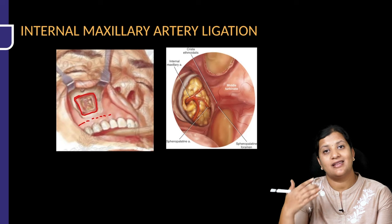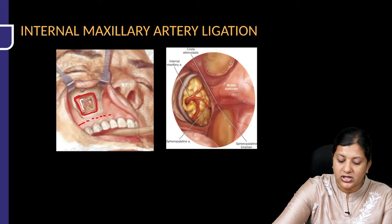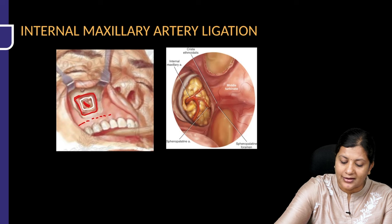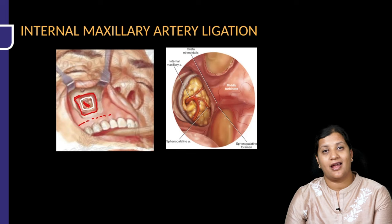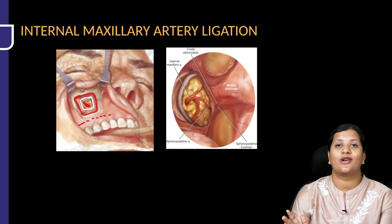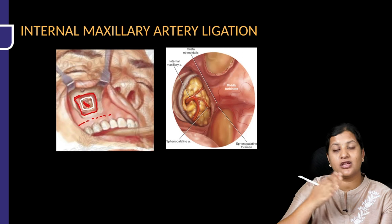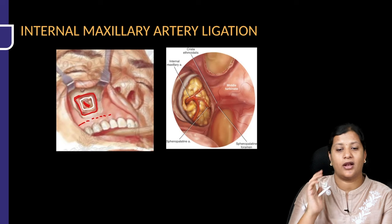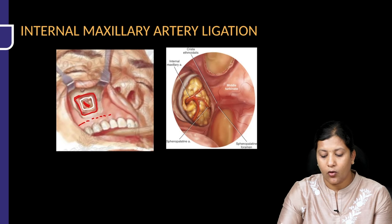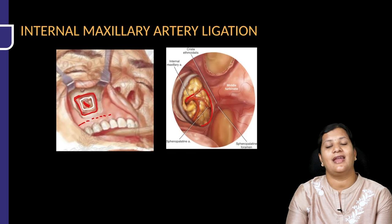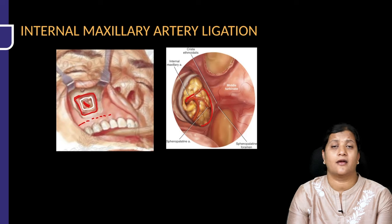Once you open the anterior wall of the maxilla, you are viewing the maxillary sinus. Then identify and open the posterior wall of the maxilla. The posterior wall of the maxilla forms the anterior boundary of the pterygopalatine fossa, which contains the internal maxillary artery. You can then ligate the artery. Endoscopically, the same approach is used — open the maxillary sinus, then the posterior wall — though a medial maxillectomy or Denker's approach may be needed to reach the posterior wall without difficulty.